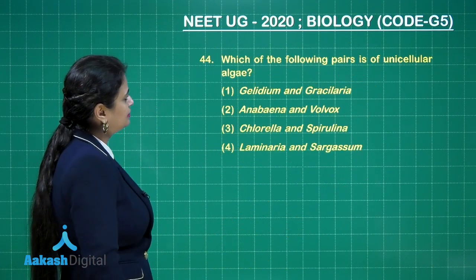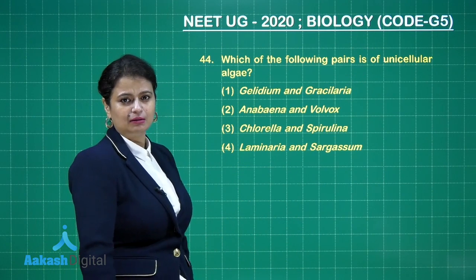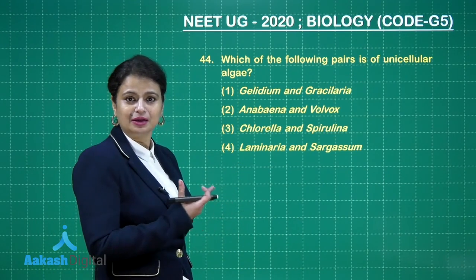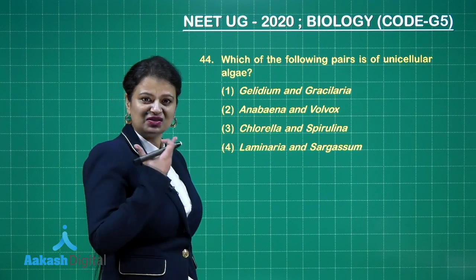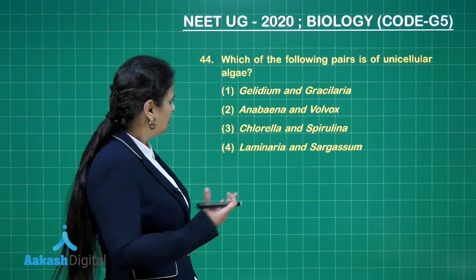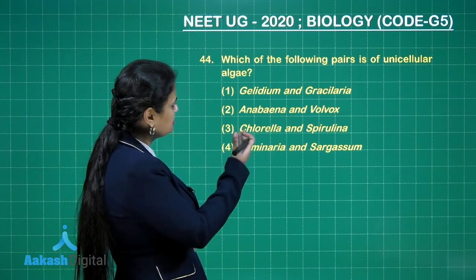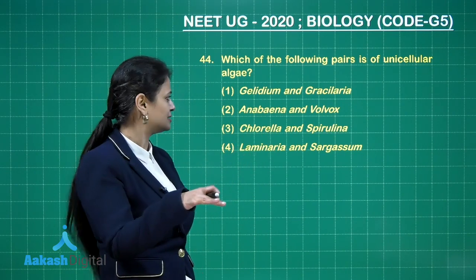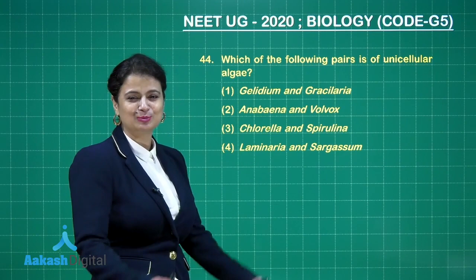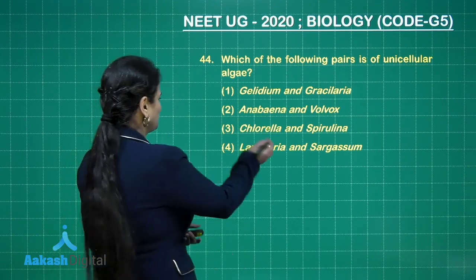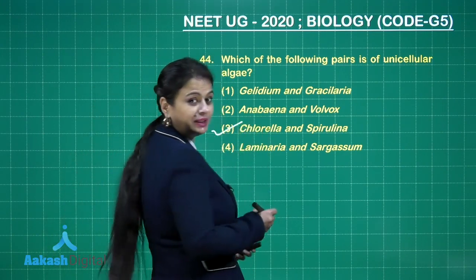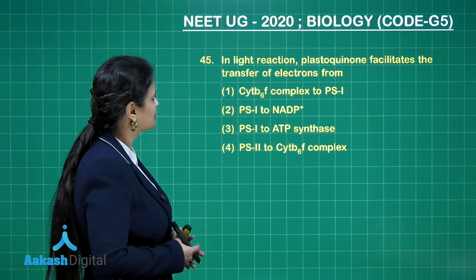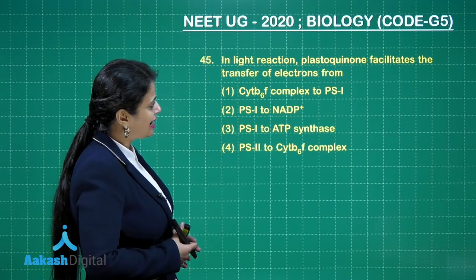Next question: which of the following is a unicellular alga? Looking at the options — Chlorella and Spirulina are unicellular algae. The rest — Gelidium, Gracilaria, Laminaria, and Sargassum — are all multicellular. Volvox is very special because it is colonial. So the right answer here is option number 3.